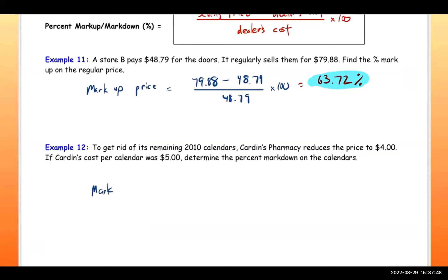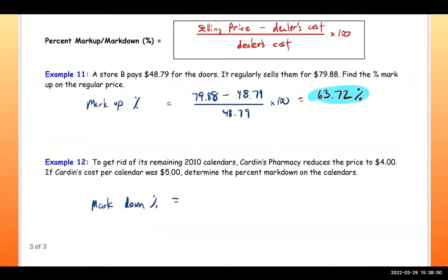This is a markdown percent. Start with the selling price of $4.00 minus the cost they paid ($5.00), divided by the cost they paid ($5.00), times 100. This gives negative 20 percent — meaning there was a 20 percent markdown in price. And that is the end of this section.